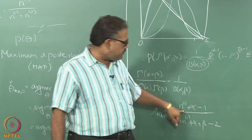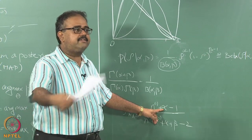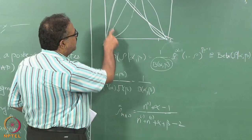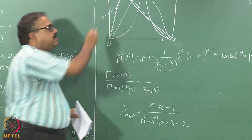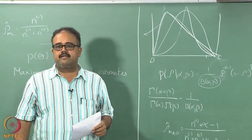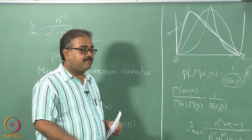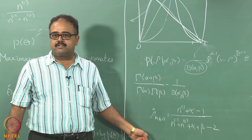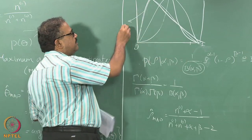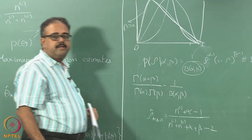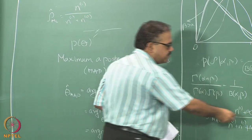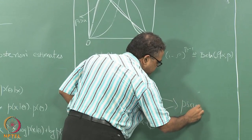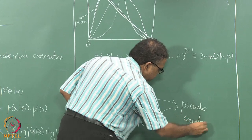So if I had actually done the experiment, I would have seen n1 heads. But with the prior, I am assuming I additionally saw alpha minus 1 heads. So if I am going to have a prior skewed toward low rho, the values of alpha and beta would be: alpha less, beta more — because alpha adds to the heads count, making rho higher if alpha is larger. So to skew it toward low rho, beta should be larger than alpha. These things are sometimes called pseudo-counts.